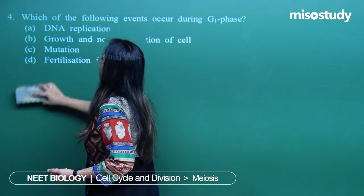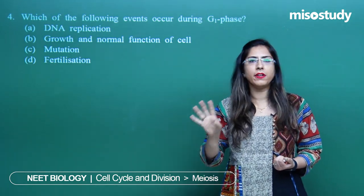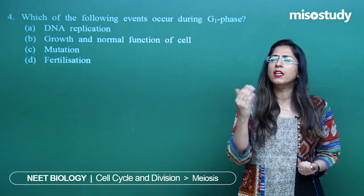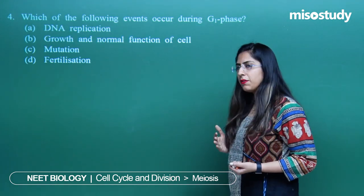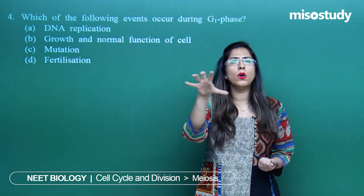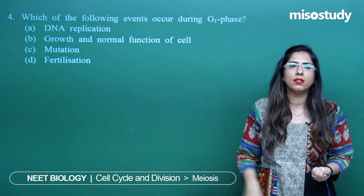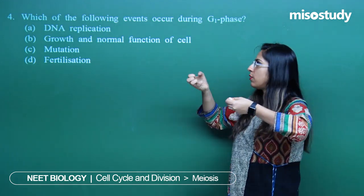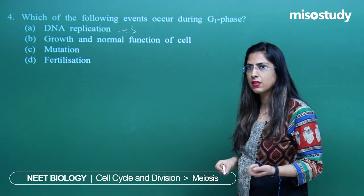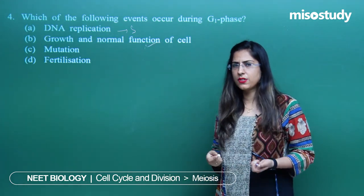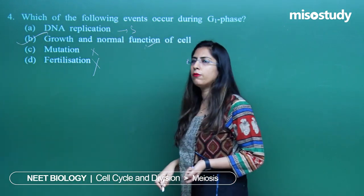Question 4: Which event occurs during the G1 phase? The cell cycle has 4 phases: G1, S, G2, and M phase. G1 phase is a stable phase where DNA synthesis is not occurring — synthesis occurs in S phase, protein synthesis in G2, and chromosome separation in M phase. Option A, DNA replication, occurs in S phase. Option B, growth and normal functioning of the cells — yes, this is the right option. Mutation and fertilization are not related. Correct option is B.